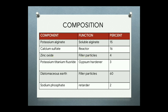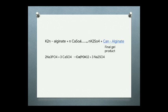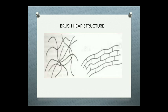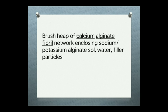The composition also includes filler particles of zinc oxide and diatomaceous earth, and potassium titanium fluoride, which is a gypsum hardener. This is because potassium alginate retards stone setting, so potassium titanium fluoride is added to accelerate stone setting. The final gel structure is a brush-heap structure — a brush-heap of calcium alginate fibril network enclosing sodium alginate salt, 80 percent water, and filler particles.